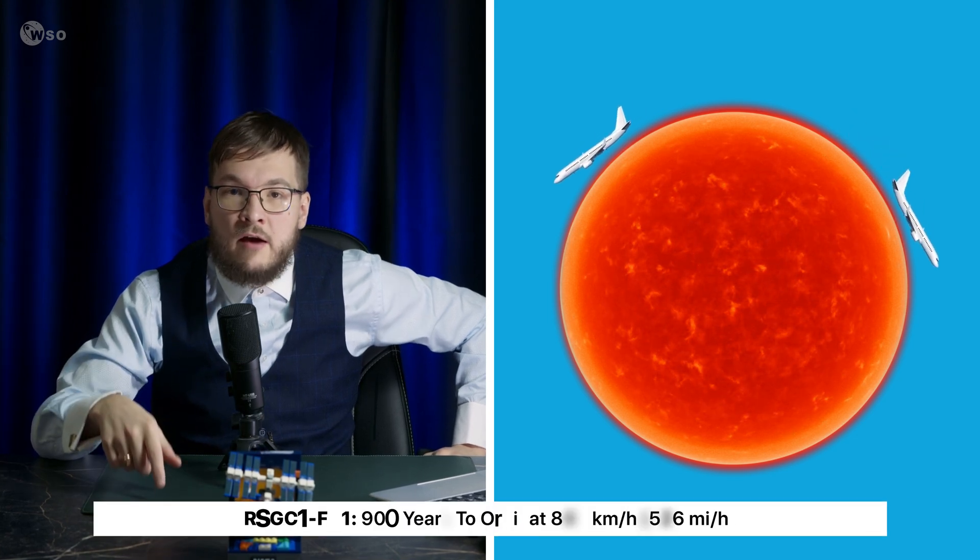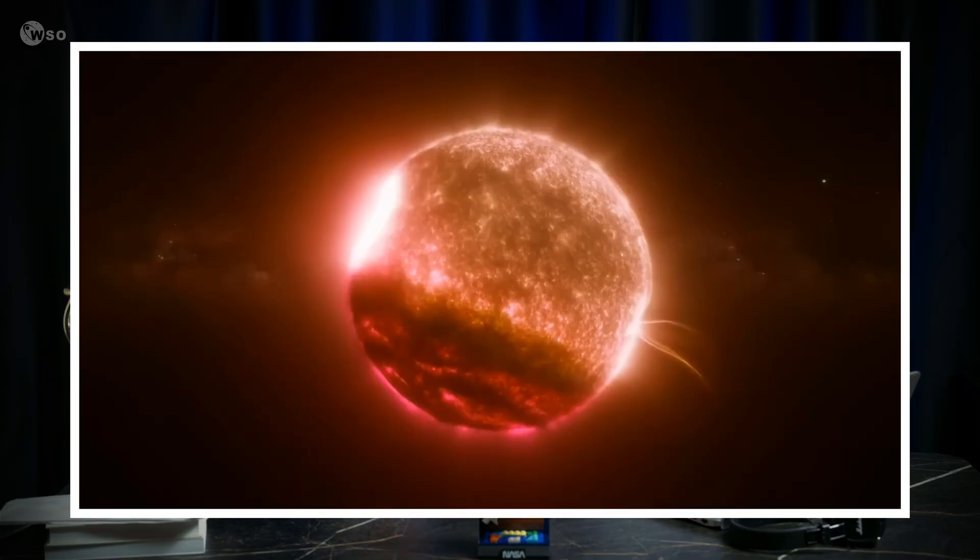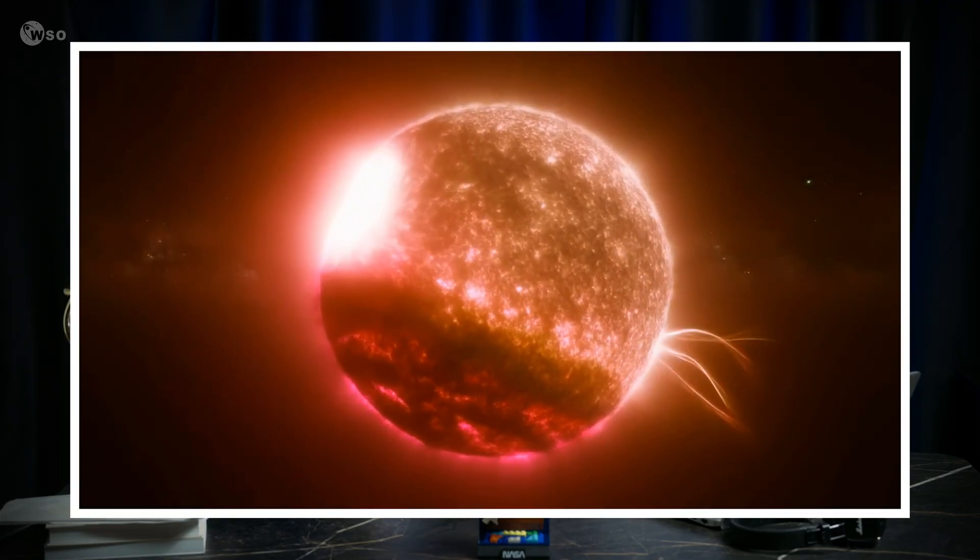A commercial airplane circling the sun would take about seven months. Circling F01 would take close to 900 years. F01 fits comfortably within theoretical limits. It's enormous, massive, but stable.